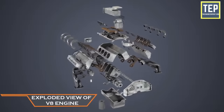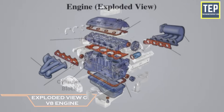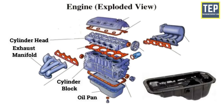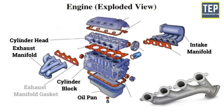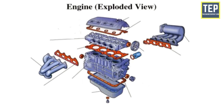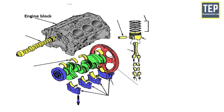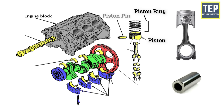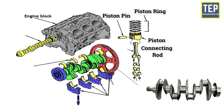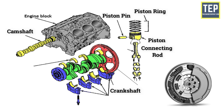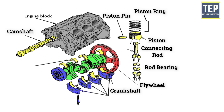The main parts of a car engine are: cylinder block, cylinder head, oil pan, manifolds, gasket, piston, piston ring, piston pin, connecting rod, crankshaft, camshaft, flywheels, rod bearing, main bearings, and bearing caps.